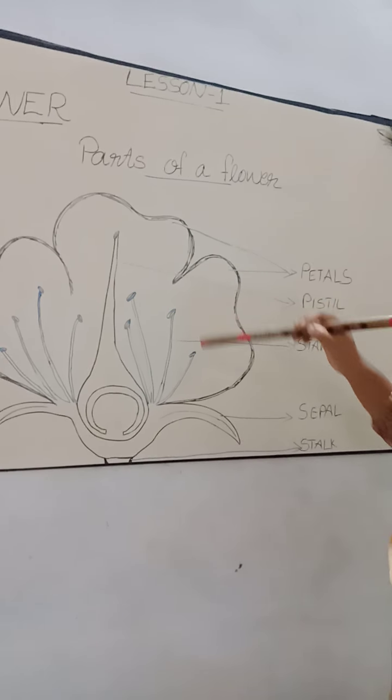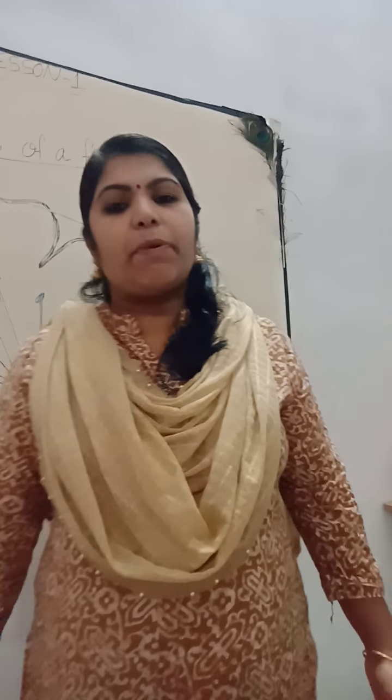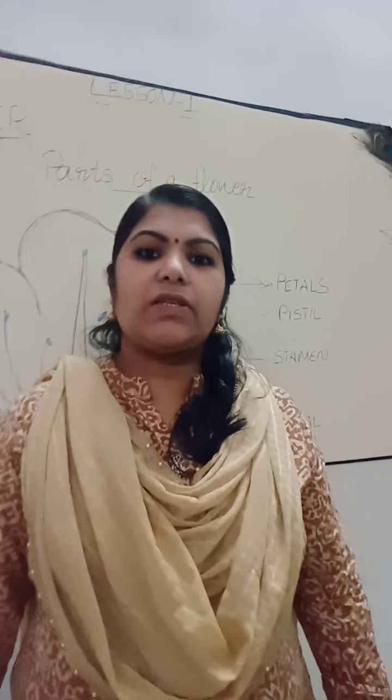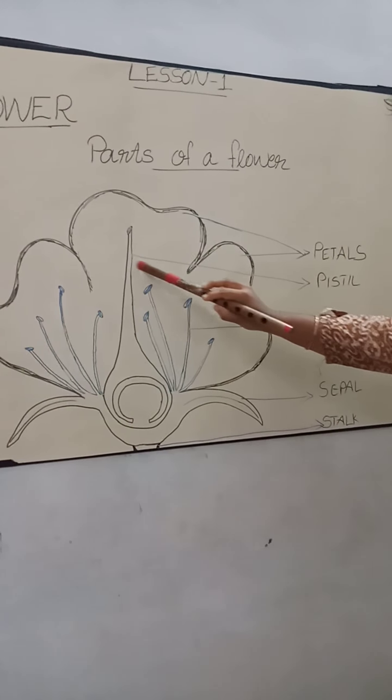Then the next part is pistil. Pistil is the female reproductive organ of a plant. Have you heard the term reproduction? So what do you mean by reproduction? Reproduction is a term you have already studied in lower classes — it is the process of giving birth to their young ones. So here, the female reproductive part is known as pistil.